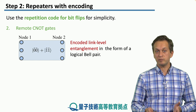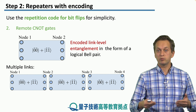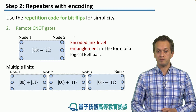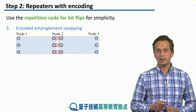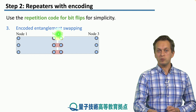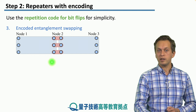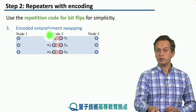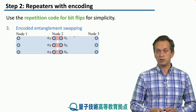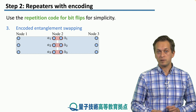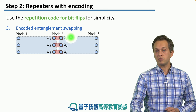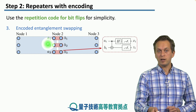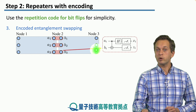Once we have link-level entanglement, we can think about having multiple of these and joining them together with logical entanglement swaps at nodes two and three. For the logical entanglement swapping in step three, we apply operations only at node two. To avoid confusion, we label the memory qubits on the left side of node two — connected to node one as a logical bell pair — as A1, A2, A3, and the memory qubits on the right side of node two as B1, B2, B3. For every pair A1-B1, A2-B2, A3-B3, we apply the following circuit.